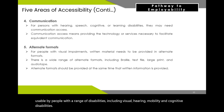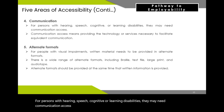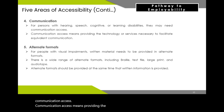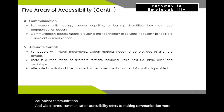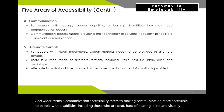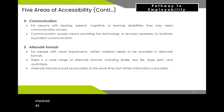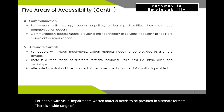Number four, communication accessibility — for persons with hearing, speech, cognitive, or learning disabilities, they may need communication access. Communication access means providing the technology or services necessary to facilitate equivalent communication, including for those who are deaf, hard of hearing, blind, and visually impaired. Number five, alternate formats — for people with visual impairments, written material needs to be provided in alternate formats including braille, text file, large print, and audio tape. Alternate formats should be provided at the same time that written information is provided.